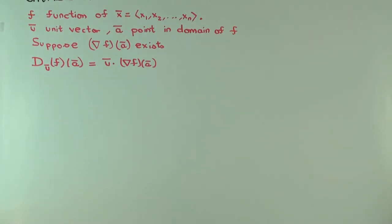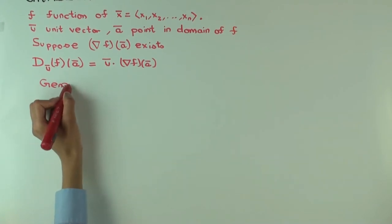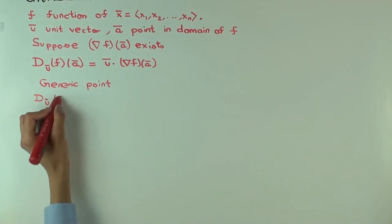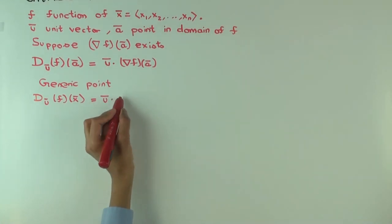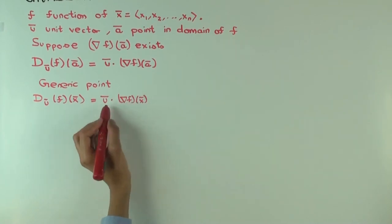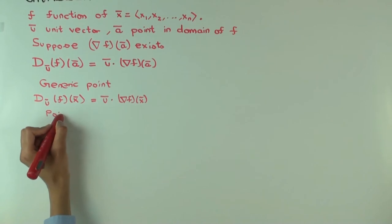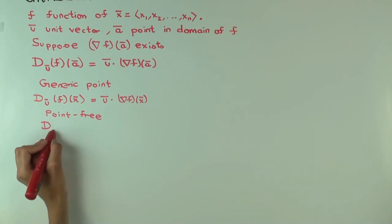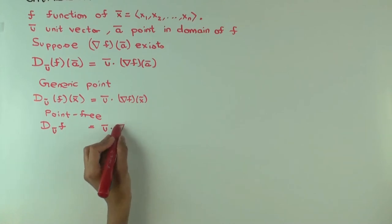If you want to do this at a generic point rather than a specific point a, you can write the generic point version. The directional derivative becomes a scalar function, u is still a constant, and the gradient becomes a vector-valued function. In point-free notation, this would be: D sub u of f equals u dot ∇f.